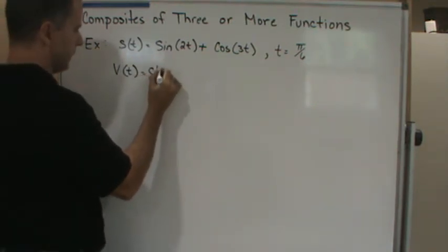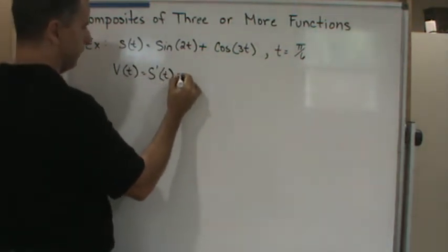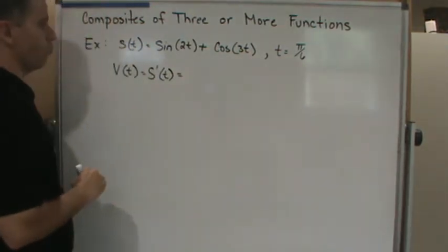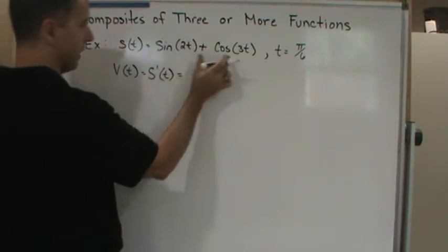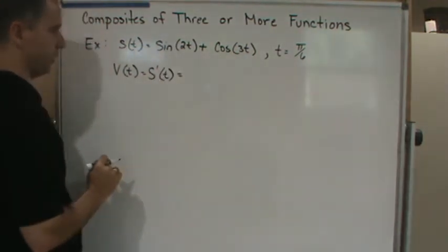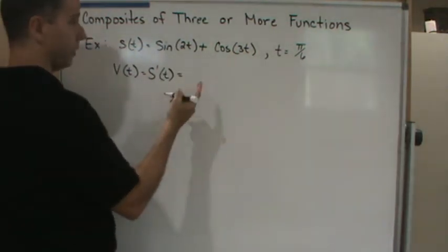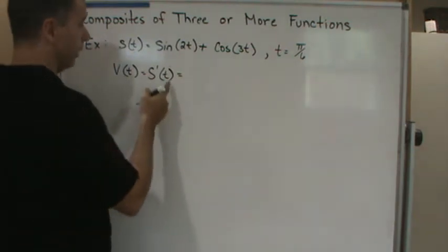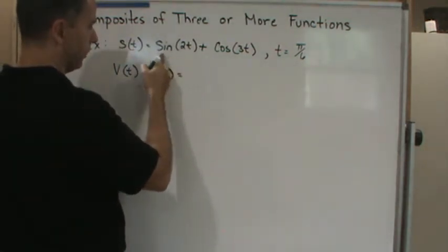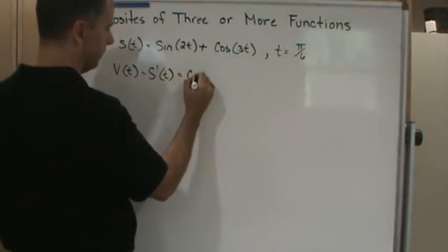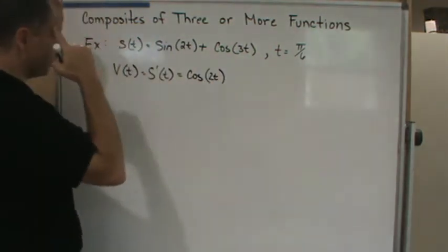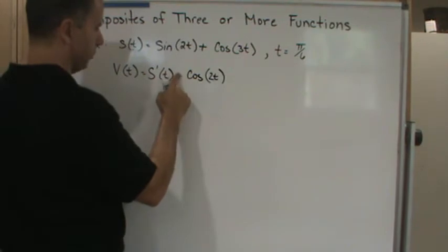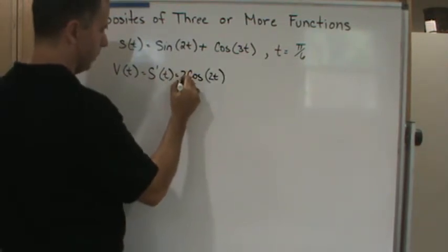Notice this is a composite function, so we're going to have to apply the chain rule. The derivative of the outside is cosine 2t times the derivative of the inside function, which is 2.